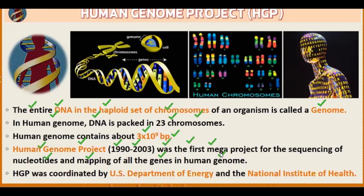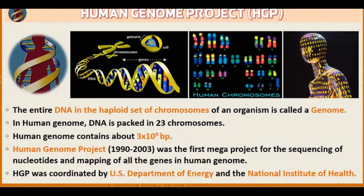The Human Genome Project was the biggest project in which they studied nucleotides — pentose sugar, nitrogenous bases, and phosphate group — one part of the DNA is nucleotides. They started to study the structure of nucleotides and mapping of genes. The HGP was coordinated by the US Department of Energy and National Institute of Health, completed between 1990 and 2003.